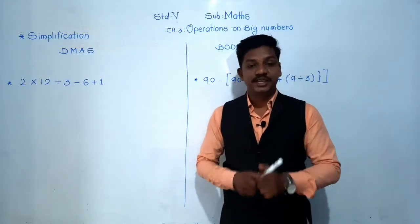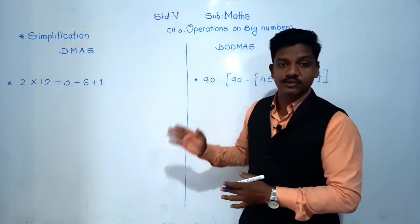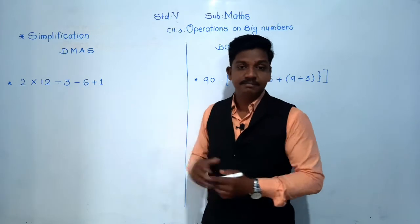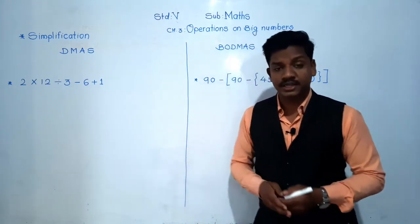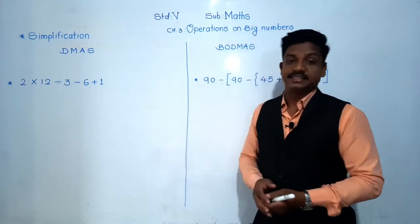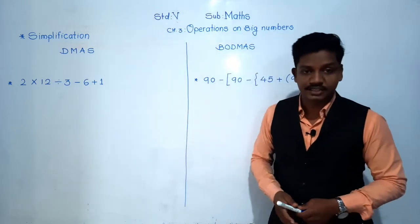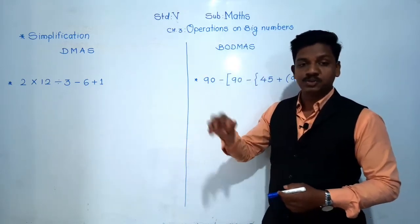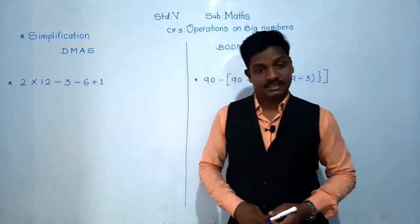Good afternoon dear students. Today we are going to learn a very important topic in chapter 3 — the concept of simplification. Simplification means there are examples where many operations are given. We have four operations: addition, subtraction, multiplication, and division. In one example, all four, or three, or two operations can be present at a time. So which operation to do first? That is what we are going to learn using the rule DMAS.